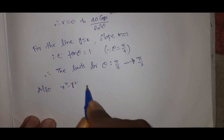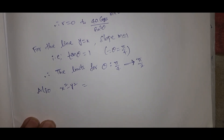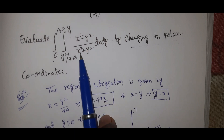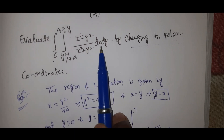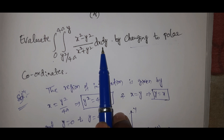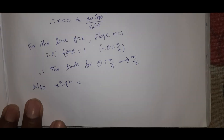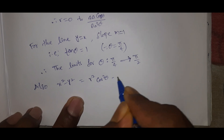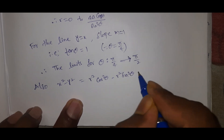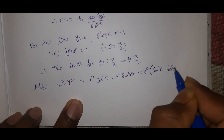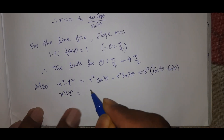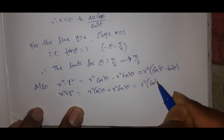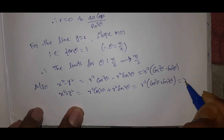Now we simplify the integrand. x² - y² = r² cos²θ - r² sin²θ = r²(cos²θ - sin²θ). And x² + y² = r² cos²θ + r² sin²θ = r²(cos²θ + sin²θ) = r². So the r² terms cancel in the numerator and denominator.